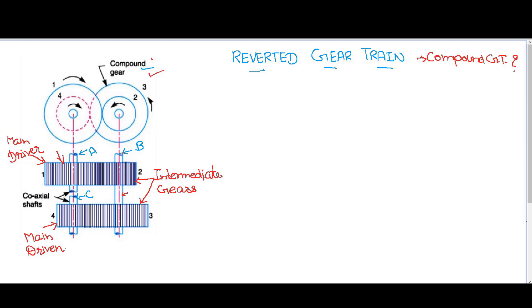Now where can we use this kind of gear train? We will use this kind of gear train where we require the input shaft and output shaft to be co-linear with each other — that means the axes have to coincide. A simple example is a watch. In case of a geared watch, the different hands — second hand, minute hand, and hour hand — are all co-linear with each other. So in this kind of application, we use this kind of reverted gear train.